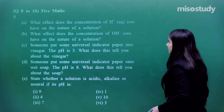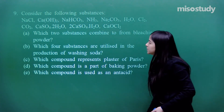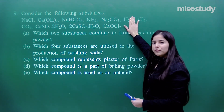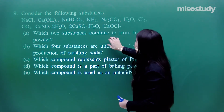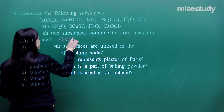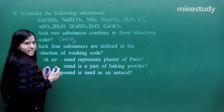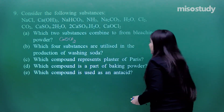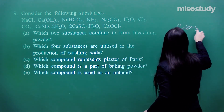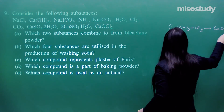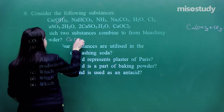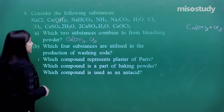Question number 9: Consider the following substances. Which two substances combine to form bleaching powder? Bleaching powder formula is CaOCl₂. The reaction is: slaked lime + Cl₂ → CaOCl₂. So the two substances are slaked lime and Cl₂ — both present in the given list.